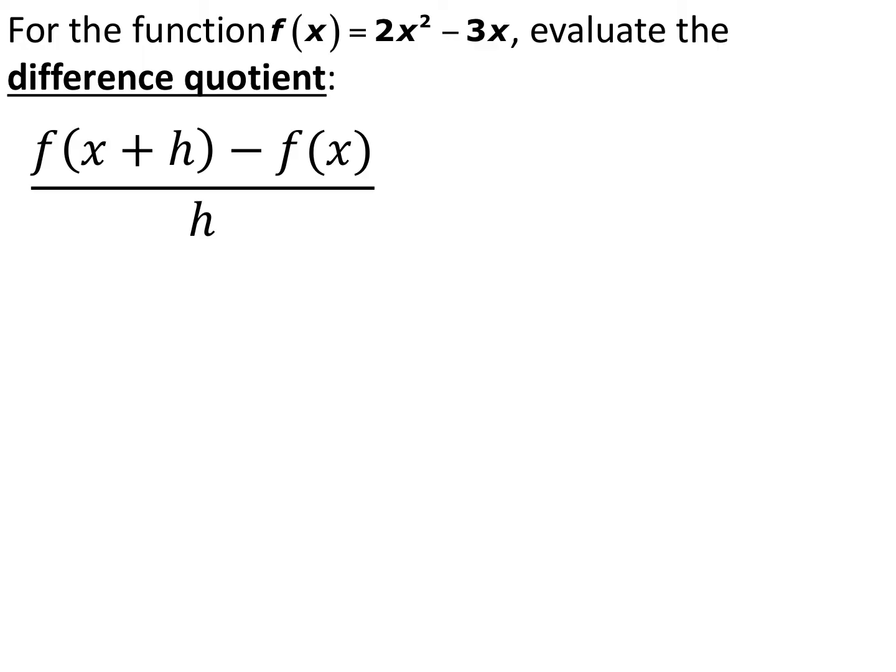This is called the difference quotient: f of x plus h minus f of x, all over h. It's a form of slope — you're subtracting something and dividing by a change in x. It's going to become a very important piece of calculus. For now, we're going to talk about how to manipulate this algebraically with function notation, using the same function f of x equals 2x squared minus 3x.